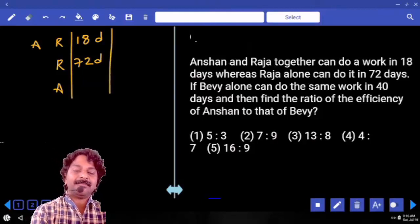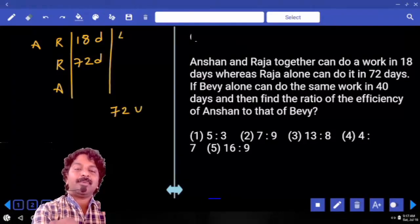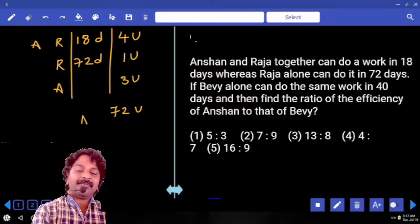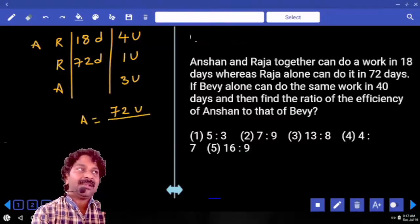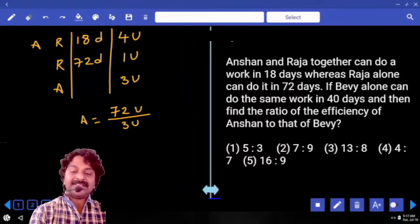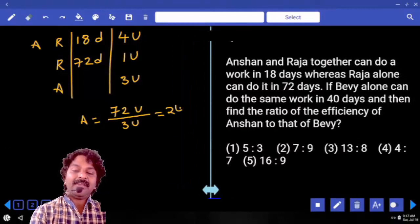Now, let us calculate LCM, 72 units. Both together can do 4 units. Raja can do 1 unit. That means Anshan can do 3 units. So, number of days taken by Anshan to complete 72 units at the rate of 3 units is equal to 24.